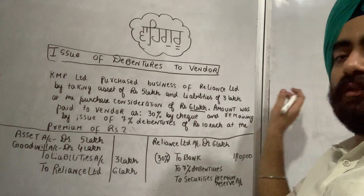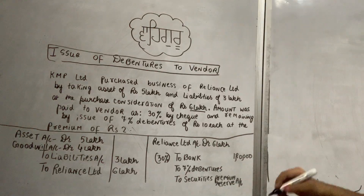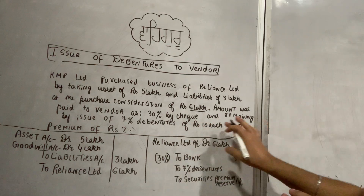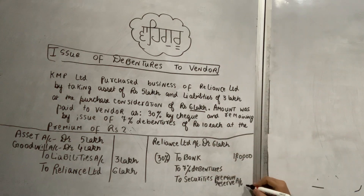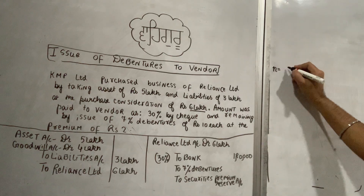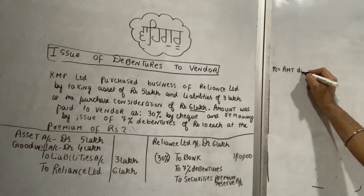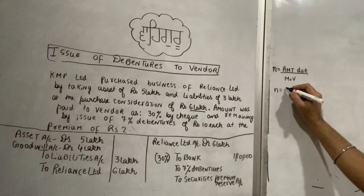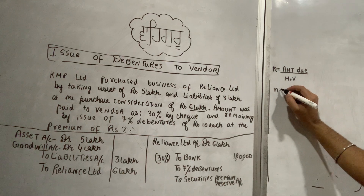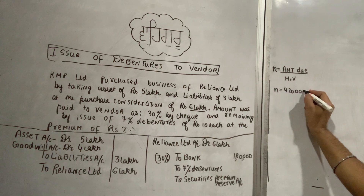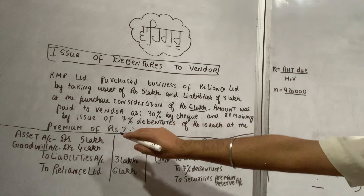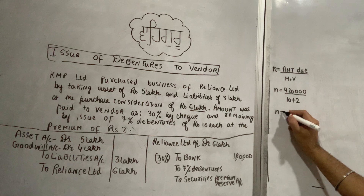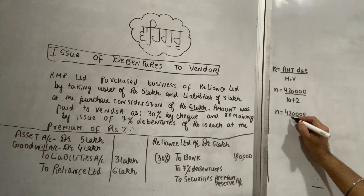Now, how many debentures can be issued? Reliance Limited didn't want all cash — 30% was by cheque, so the remaining amount is due in debentures. The formula is: Number of debentures = Amount due ÷ Market Value. Amount due = 6 lakh minus 1 lakh 80 thousand (30% of 6 lakh) = 4 lakh 20 thousand. Since debentures are issued at a premium of ₹2, market value = ₹10 + ₹2 = ₹12.